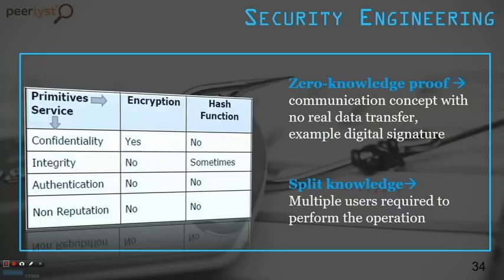Other important concepts: zero knowledge proof — a communication concept with no real data transfer, for example a digital signature where only a signature is transferred, not real data. Split knowledge requires multiple users to perform an operation — used sometimes for critical information access where two people must access simultaneously to enable access to the data.